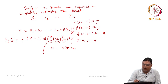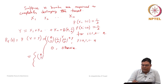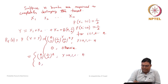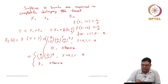This can be simplified as n-choose-y times (1/2) to the power n, because whenever p equals one half, we can simplify the expression this way. This equals 0 otherwise.